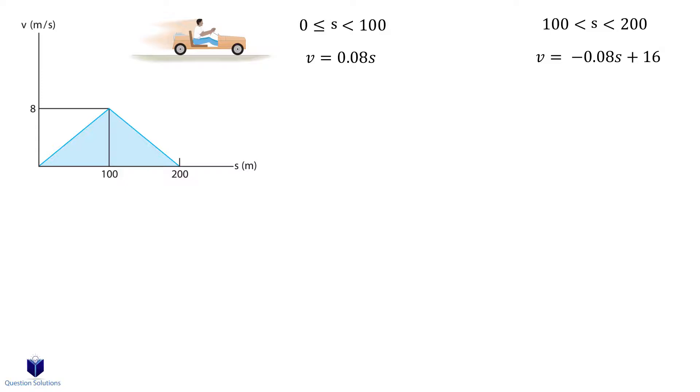we need to use ads is equal to vdv. For the first segment, we can take the derivative of our equation, dv over ds is equal to 0.08. We can manipulate it to write it like this.